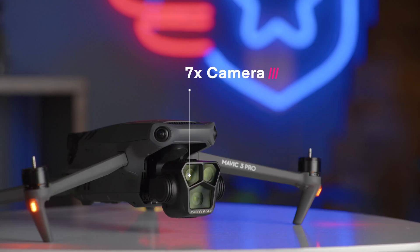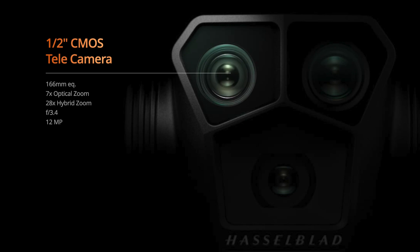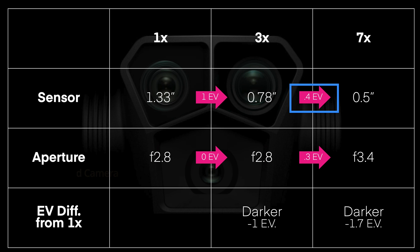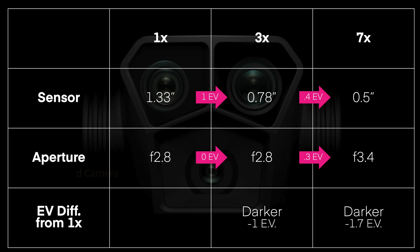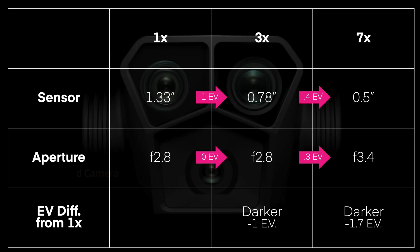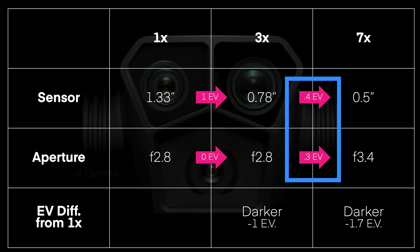What about the third camera — the 7x zoom? That camera has yet another sensor, a half-inch sensor, which theoretically makes it roughly 0.4 stops of light darker than the 3x camera, or 1.4 stops darker than the 1x camera. It also has a fixed aperture of f/3.4, which adds another 0.3 stops. So the 7x camera is technically 1.7 stops darker than the 1x camera and 0.7 stops darker than the 3x camera.